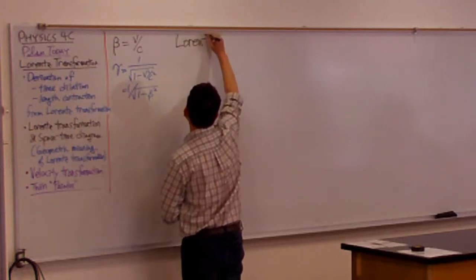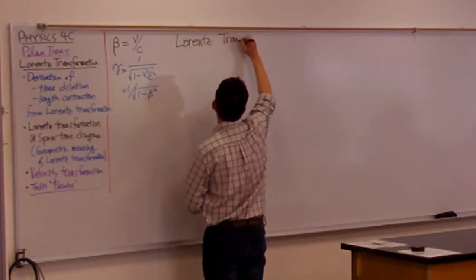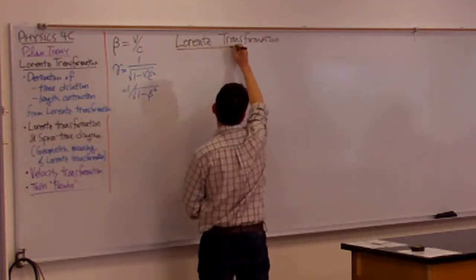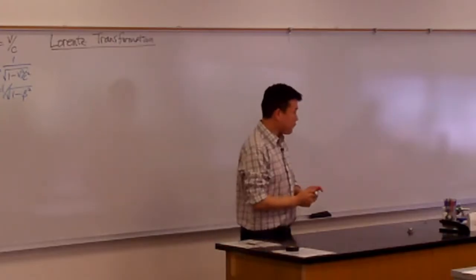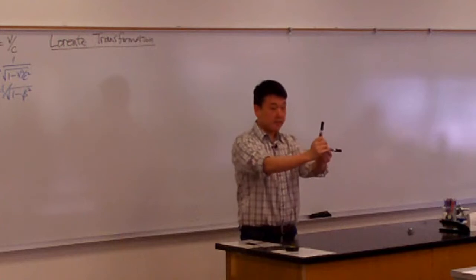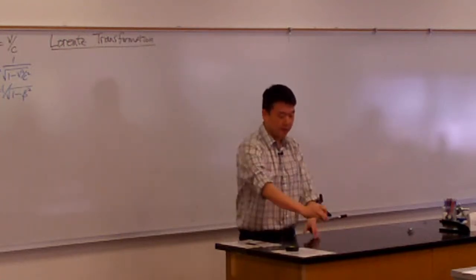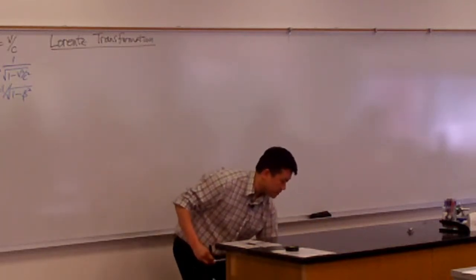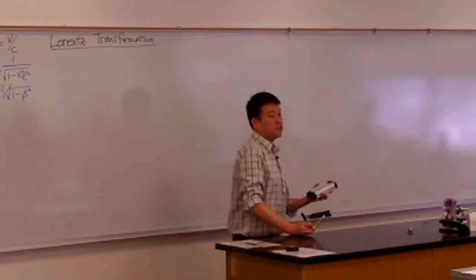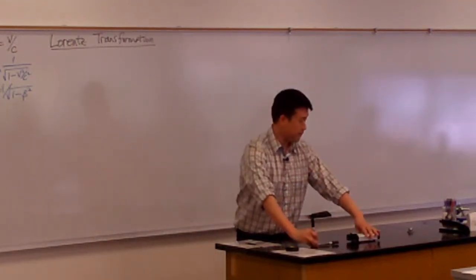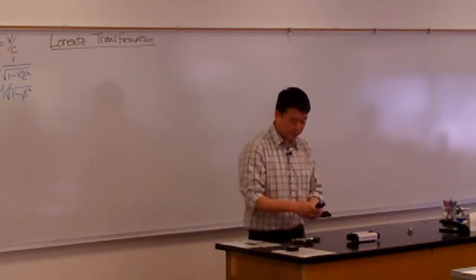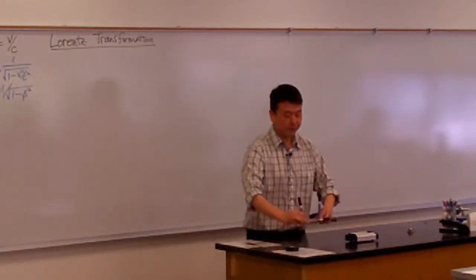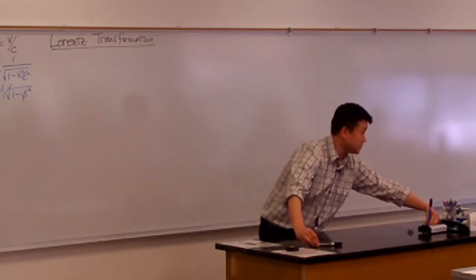So this is the Lorentz transformation. It's describing how, if you have two reference frames. Imagine a reference frame, coordinate axis that's based on your lap. So this is my frame S. And I can compare that to another reference frame that's defined by something else that's moving at a constant speed. This is my frame S prime if it's moving at constant speed.